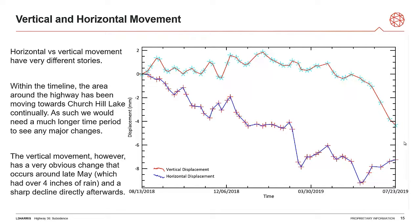The vertical movement, however, has a very obvious change occurring around late May. I was checking this against the weather, and in late May we had a lot of rain — about four inches in one day before this happened — and we had periods of extremely high temperatures and extremely low temperatures, all things that commonly cause the clays in this region to collapse. According to this monitoring, if we had been tracking the vertical movement, we might have been able to capture this movement, especially that massive degradation down into the lake bed around May, in time to prep for the possible collapse in July.